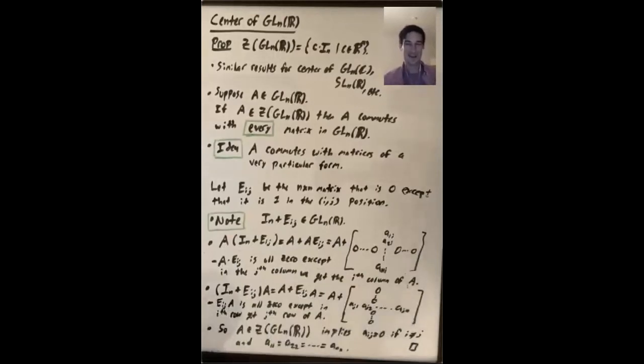It might be helpful to write down an example where n equals three and ij is like two, three or something like that, just to check that you really believe this calculation.